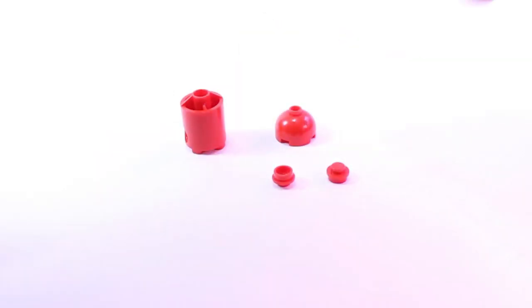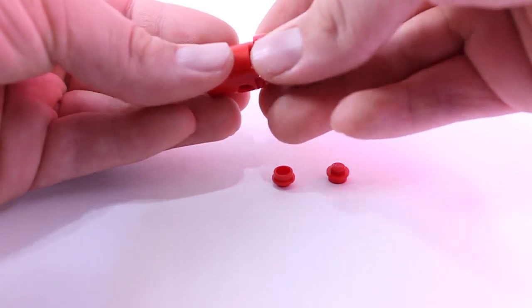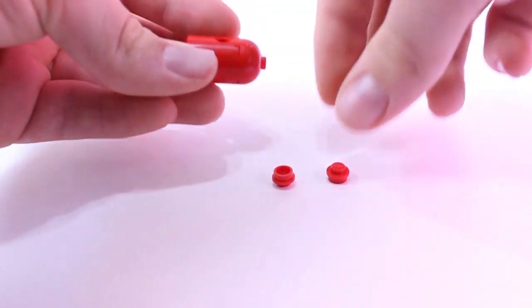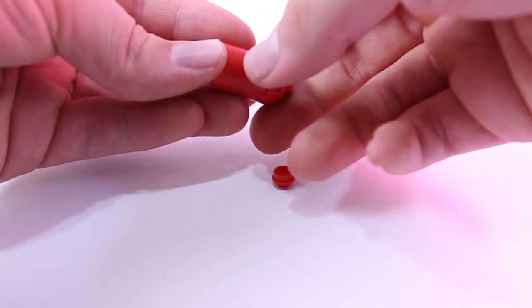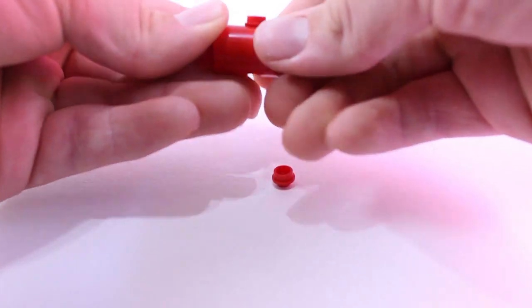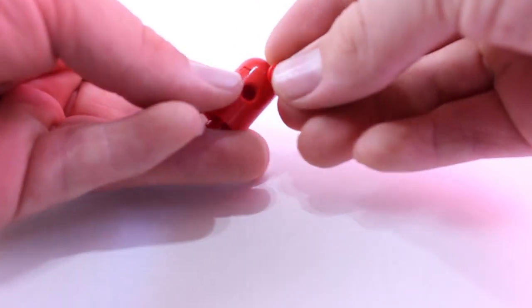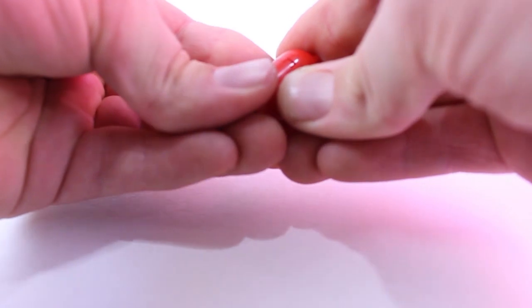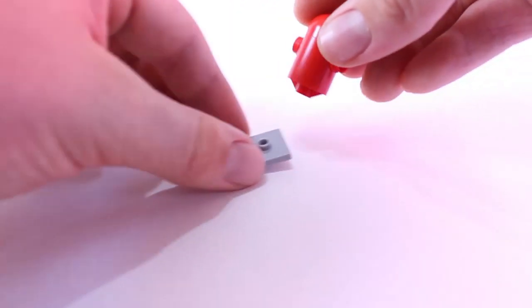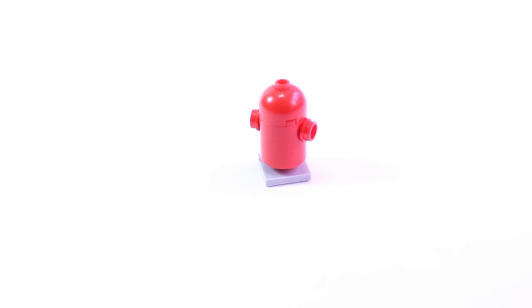Okay, so to begin with the fire hydrant, you basically just want to take one of these red astromech droid bodies, then put a 2x2 dome on top with studs in either of the technicals on either side, and then you can just stick this on a jumper around your city and it'll look really nice.